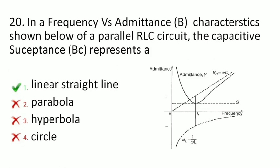Next is: in the frequency versus admittance characteristics of a parallel RLC circuit, the capacitive susceptance represents which curve? In a parallel RLC circuit, all three elements are connected in parallel. The capacitive susceptance is a straight linear curve, as you can see. This curve is the inductive susceptance. So the capacitive susceptance is a linear straight curve and option one is correct.